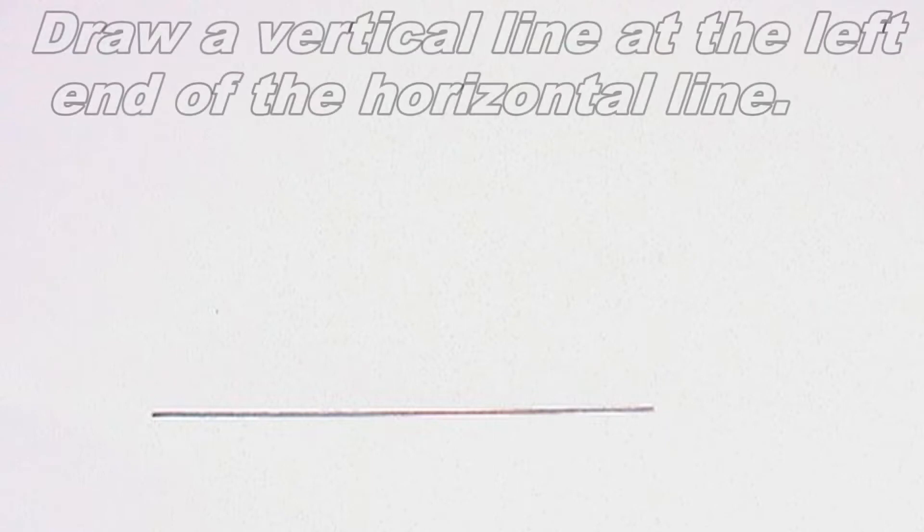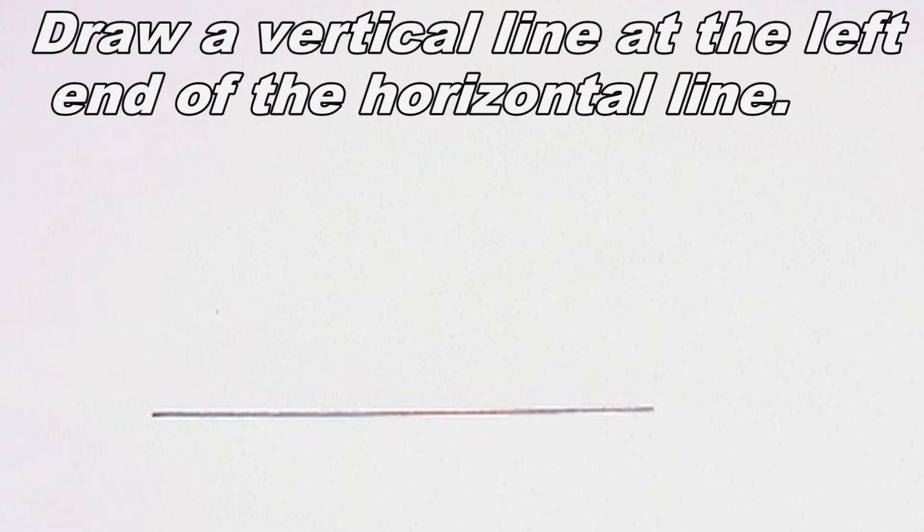The next step I will take is to draw a vertical line at the left end of the horizontal line. I will perform this step using my T square and a set square.